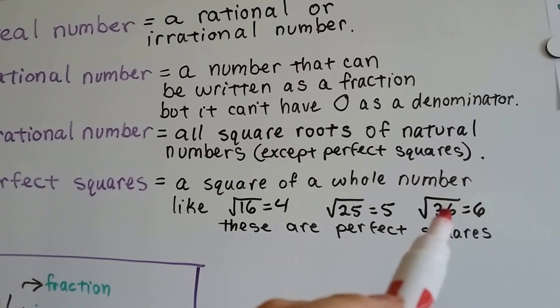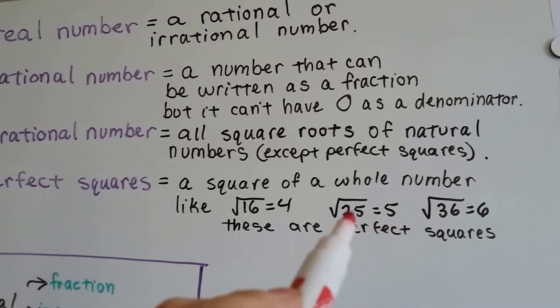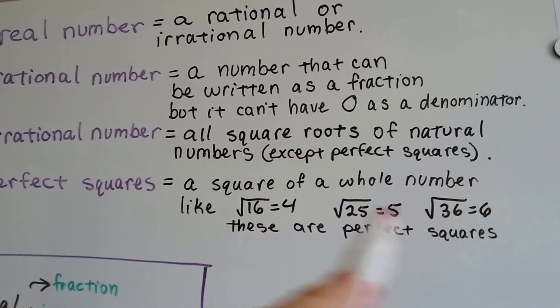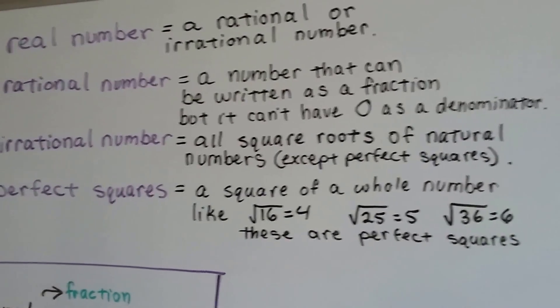You multiply 6 to itself and you get 36. You multiply 5 to itself, you get 25. You multiply 4 to itself and you get 16. These are perfect squares because they work out perfectly.